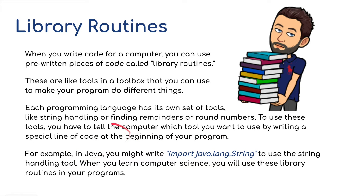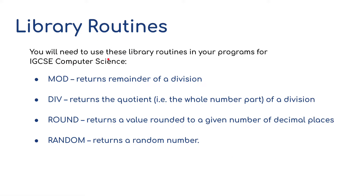For example, in a language such as Java, you might write import java.lang.string to use the string handling tools. For IGCSE computer science, you need to know: mod, which returns the remainder of a division; div, for returning the quotient — the whole number part of a division; round, which rounds to significant figures or decimal places; and random, for returning random numbers.